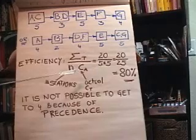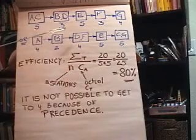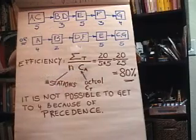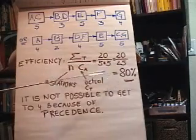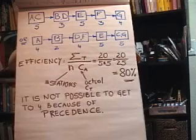Either one of these are the same. The summation is 20 of all the times. We've got five workstations in both examples and our actual cycle time is five. So 20 over five times five is 20 over 25, or 80 percent. This assembly line is 80 percent efficient.